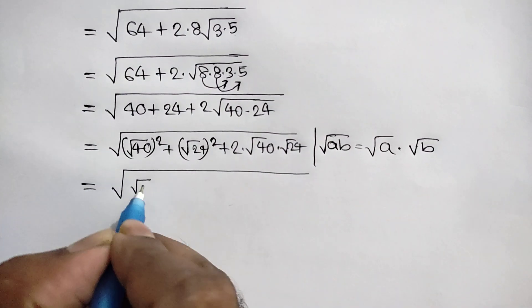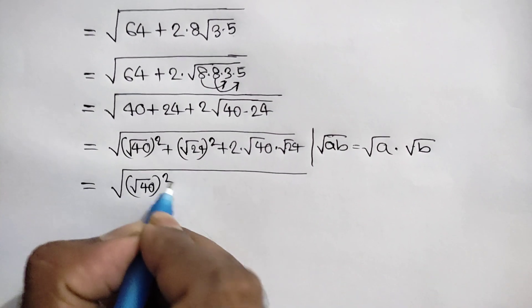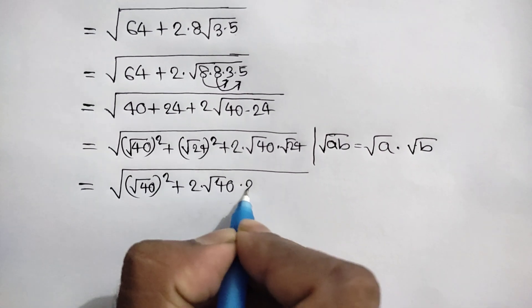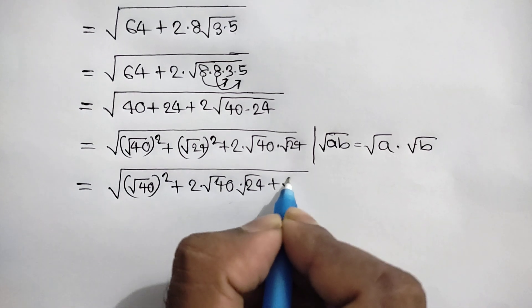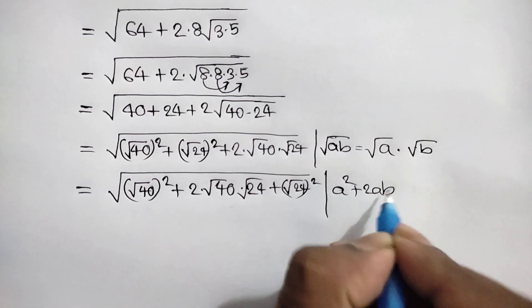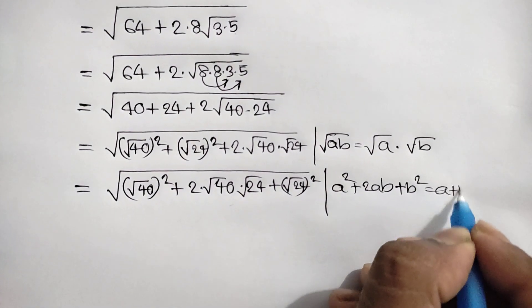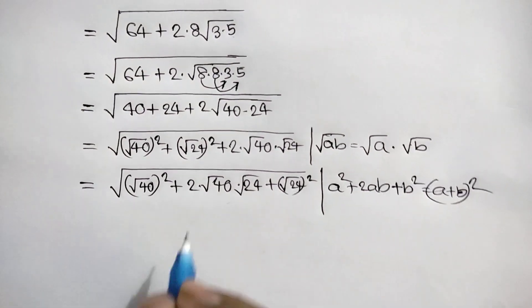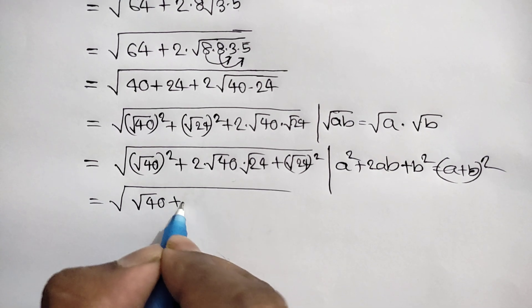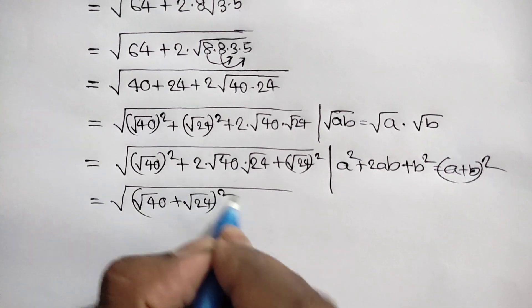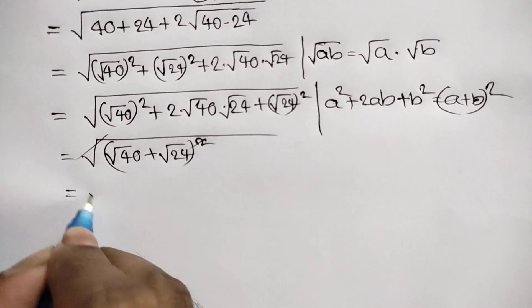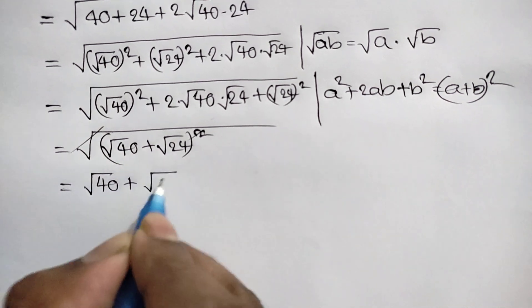We now have (square root of 40) squared plus 2 times square root of 40 times square root of 24 plus (square root of 24) squared. We know that a squared plus 2ab plus b squared equals (a plus b) squared. Applying this rule, we get square root of (square root of 40 plus square root of 24) squared. The outer square and square root cancel, giving square root of 40 plus square root of 24.